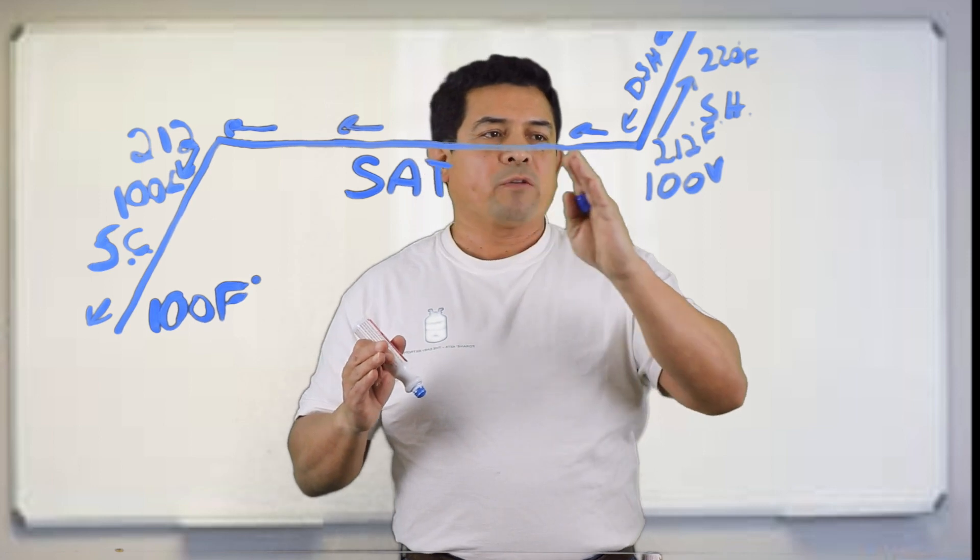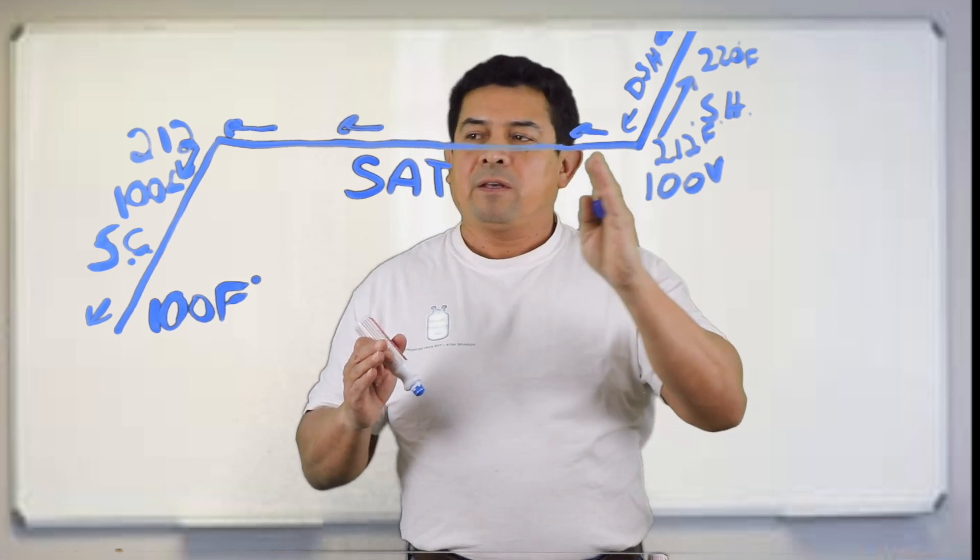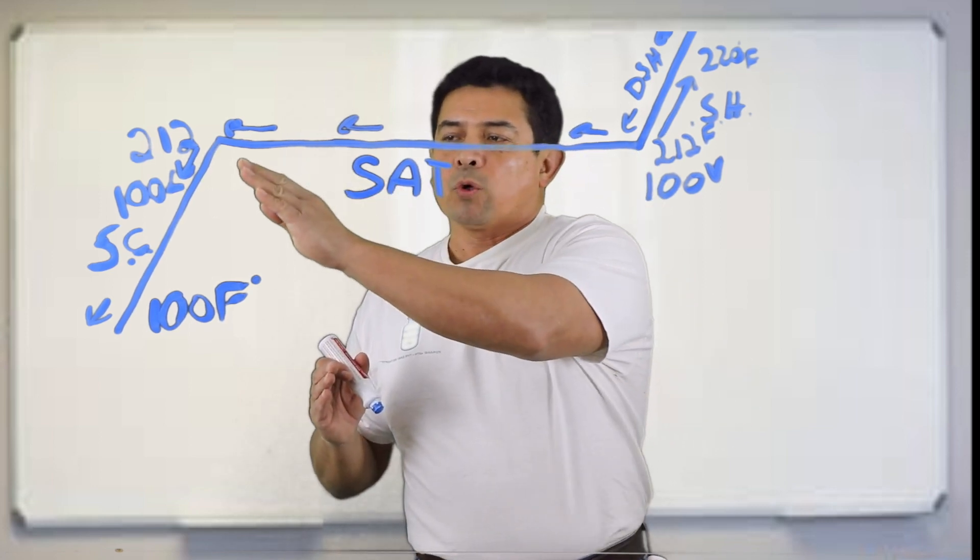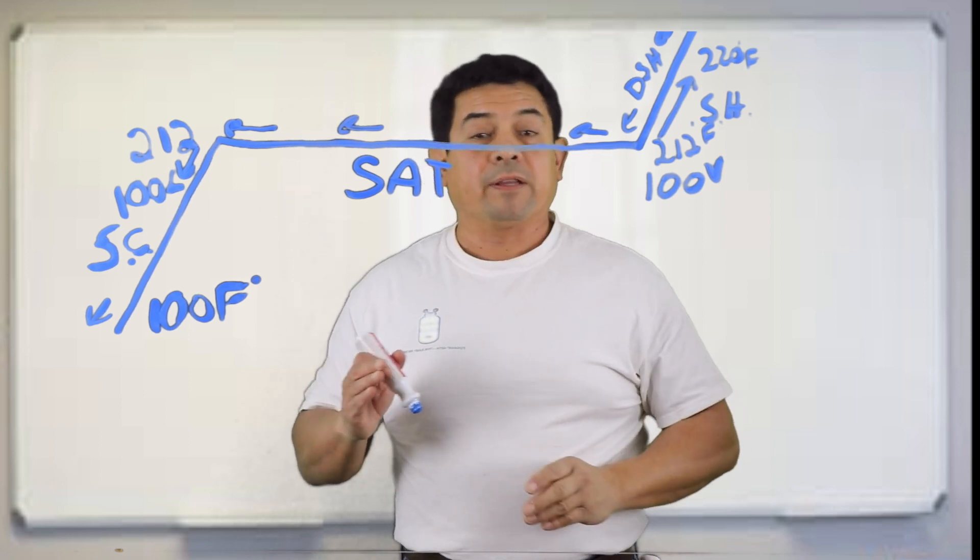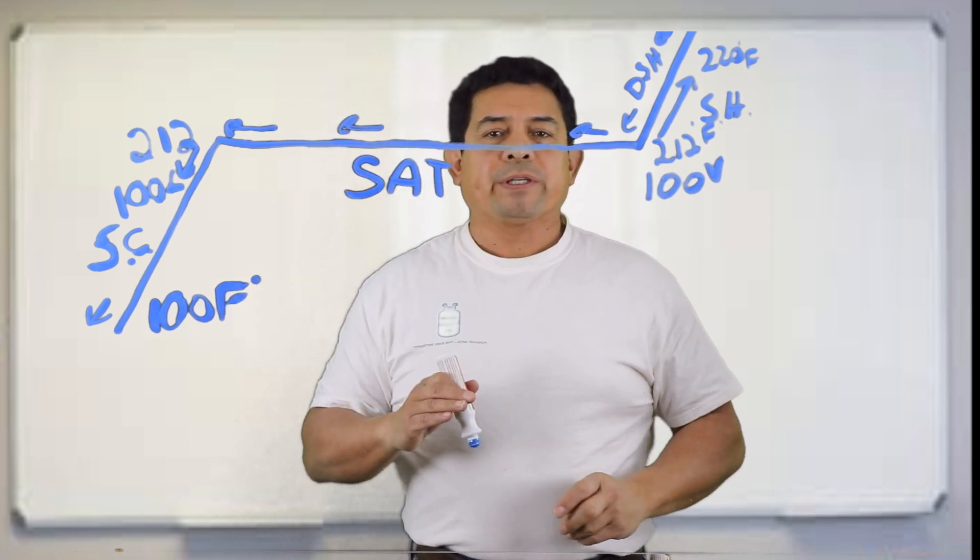The further we're this way, the more vapor we have, the less liquid. The more this way we are, the more liquid we have, the less vapor. But right here, it is saturated.